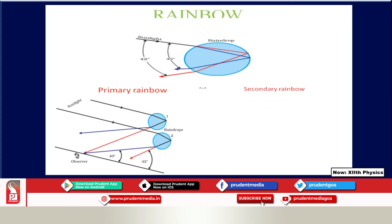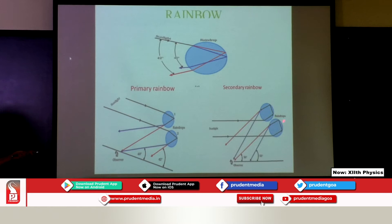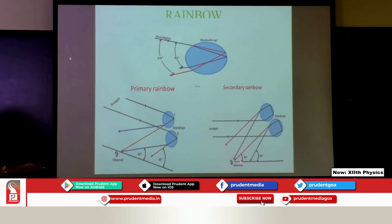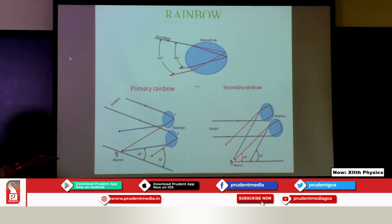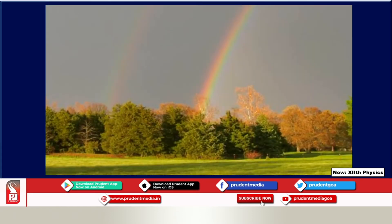The secondary rainbow is a combined effect of refraction, dispersion, and total internal reflection, but here it suffers total internal reflection at two places. The observer sees violet on top and red below. The secondary rainbow is fainter than the primary because it suffers two total internal reflections. You can see this in the picture — secondary is fainter than primary.